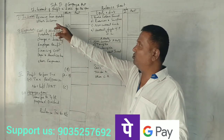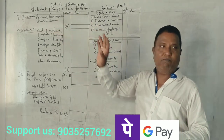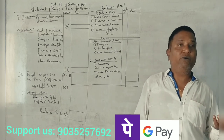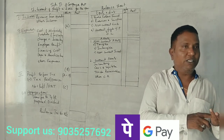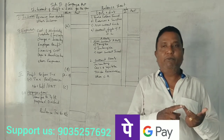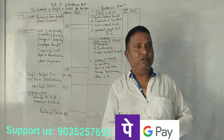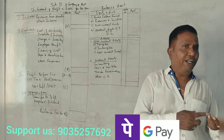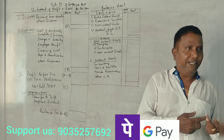Next is Other Income. Other income includes discount received, commission received, brokerage received, dividend received, and rent received.